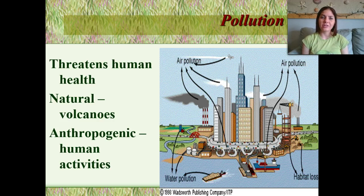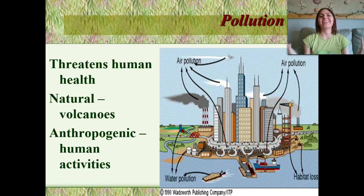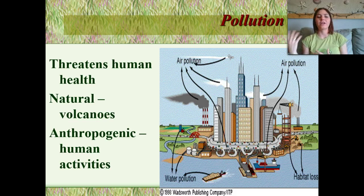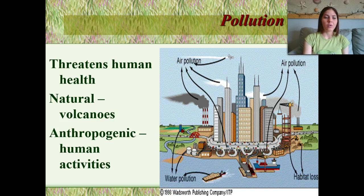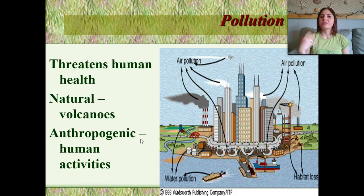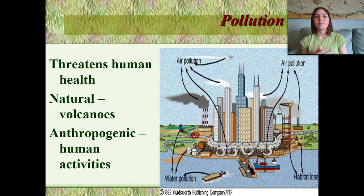Natural sources of pollution include volcanoes, and then man-made sources are pretty much anything and everything — we're polluting the water, we're polluting the air. One word I want to make sure everybody knows is anthropogenic, which means humans or man-made. So anytime you hear anthropogenic, that means a human cause.